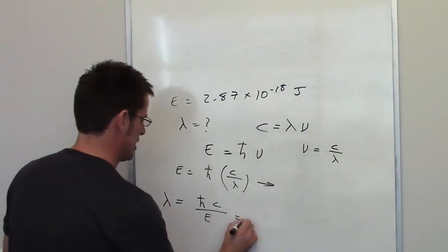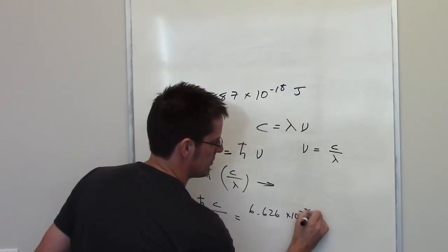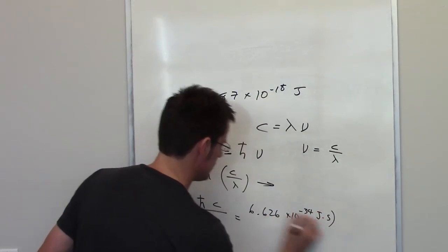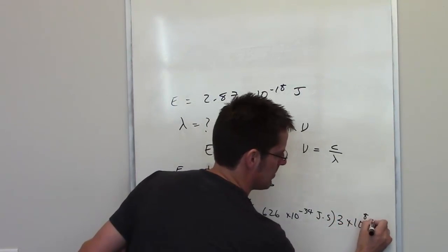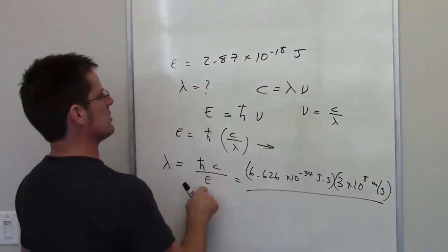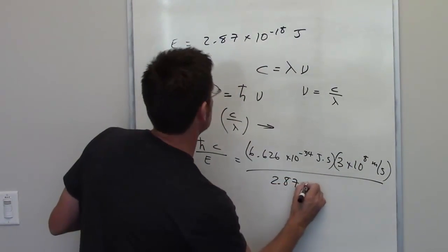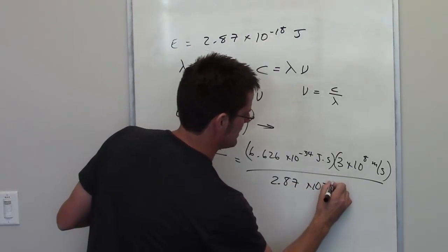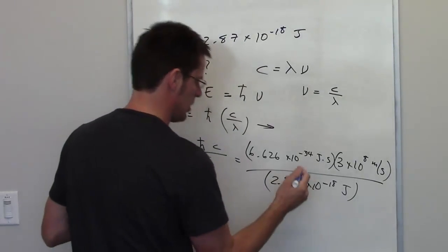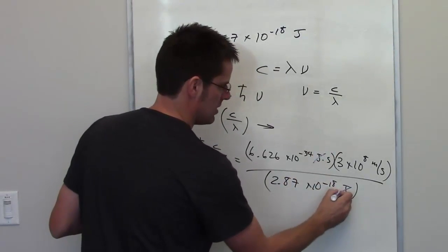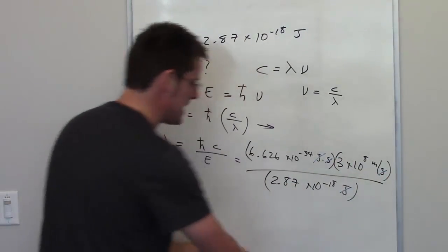Now it's just substitution. Planck's constant is 6.626 times 10 to the negative 34th joules times seconds. The speed of light is 3 times 10 to the 8th meters per second. And the energy given for this problem is 2.87 times 10 to the negative 18th joules. The units all cancel out beautifully — joules cancel joules, seconds cancel seconds, and I'm left with meters.